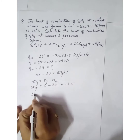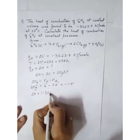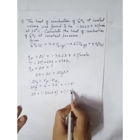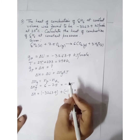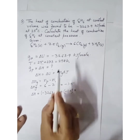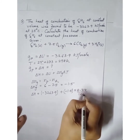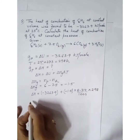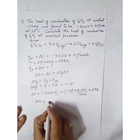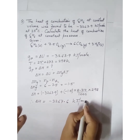Substituting into the equation: delta H equals delta U (minus 3,263.9) plus delta_Ng (minus 1.5) times R (8.314 divided by 1000, converted to kilojoule) times T (298). When you solve this, you get delta H as minus 3,267.6 kilojoule per mole.